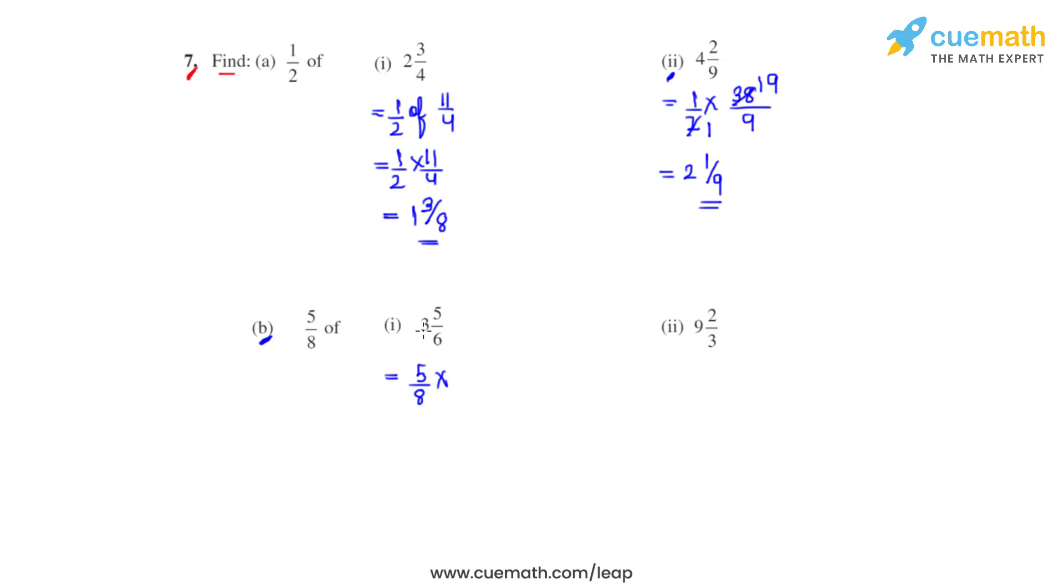So 6 times 3 is 18, 18 plus 5 gives us 23, so 23 over 6. On multiplying, we get the product as 115 divided by 48. Dividing 115 by 48 gives us the quotient as 2 and the remainder as 19. So the mixed fraction for this will be 2 19 over 48.